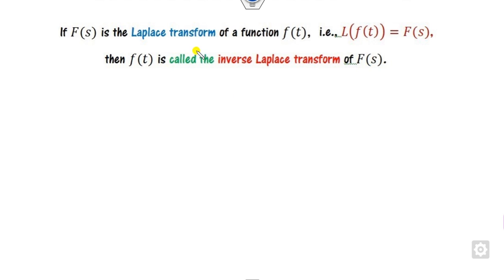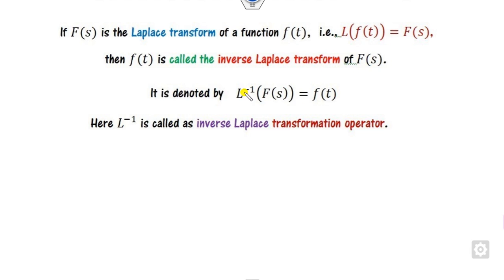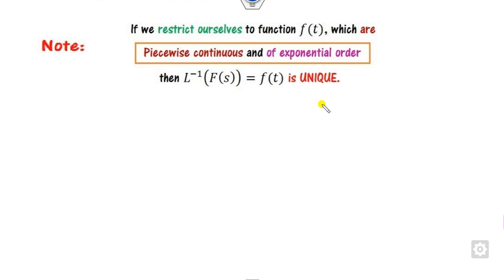What is the Laplace transformation? We have already discussed that if f(t) is a function which is piecewise and of exponential order, then you can define the Laplace transformation of f(t) as defined here. If you find the value of f(t) from this, that f(t) is called the inverse Laplace transformation, which we denote as the Laplace inverse operator. This Laplace transformation is unique only when f(t) is of exponential order as well as piecewise; otherwise it will not be a unique Laplace inverse.